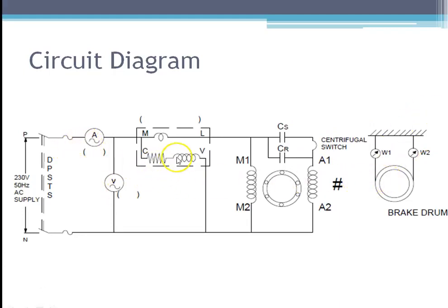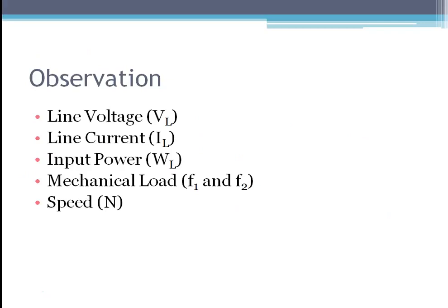The load torque should always be zero initially. If it is not, take it as an error value. After taking the no-load reading, add load by slowly tightening the brake drum, thereby adding mechanical load to the motor. For each addition of load, take another set of readings.